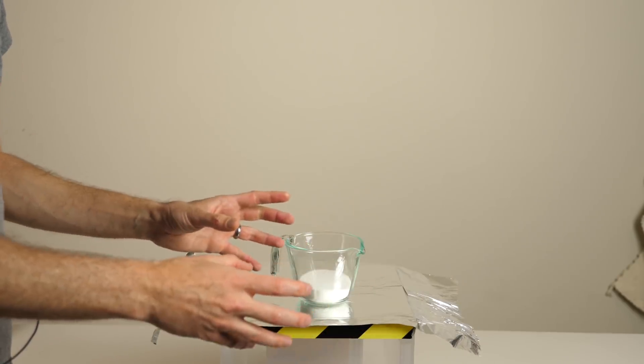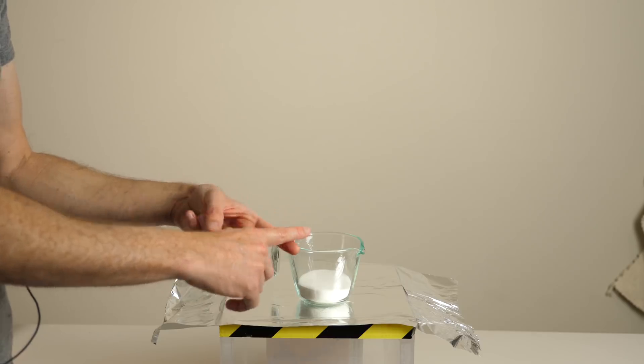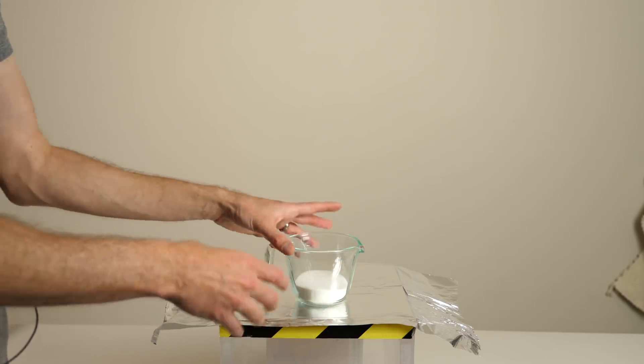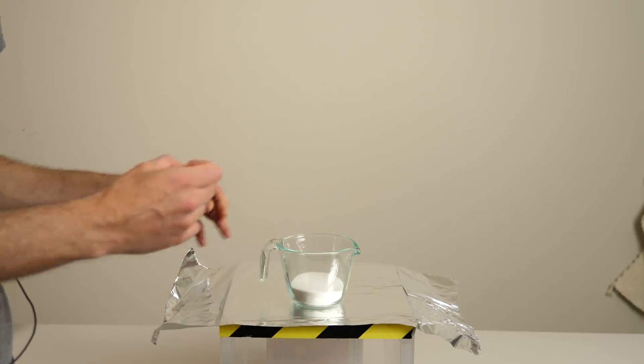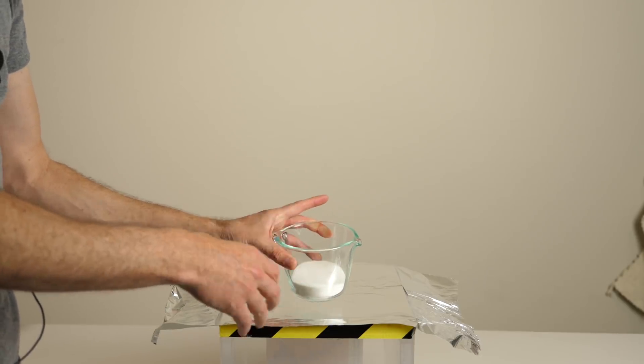So normally when you burn things, it turns into carbon dioxide and water. But when you burn sugar and not enough oxygen gets to the sugar, you can produce just plain old carbon. And due to this effect, you can get something that's called a sugar snake.